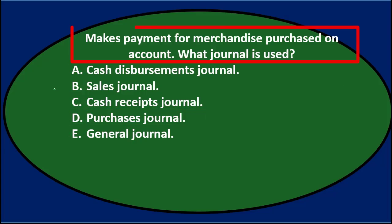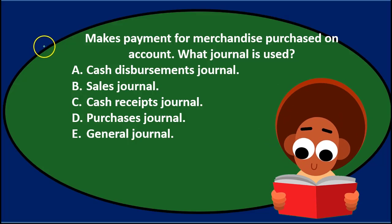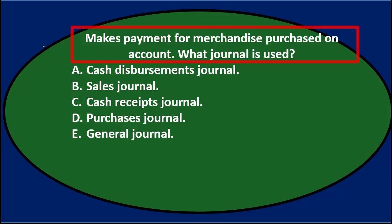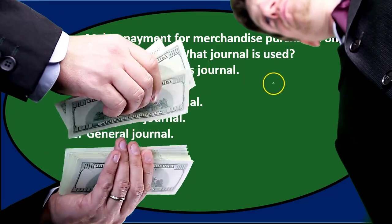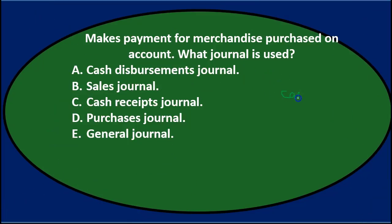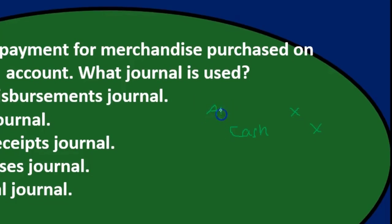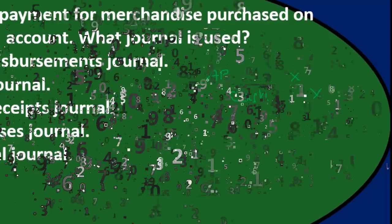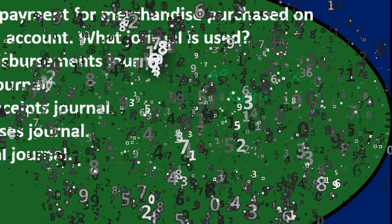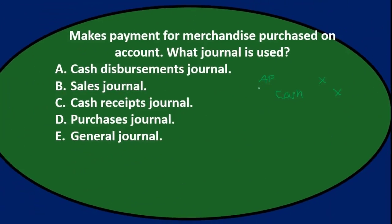Next question: Makes payment for merchandise purchased on account — what journal is used? A. Cash disbursements journal. B. Sales journal. C. Cash receipts journal. D. Purchases journal. Or E. General journal. We'll read through it and use the process of elimination. If we write out the journal entry, cash is the payment and we debit accounts payable. Writing out the journal entry helps identify which special journal applies.